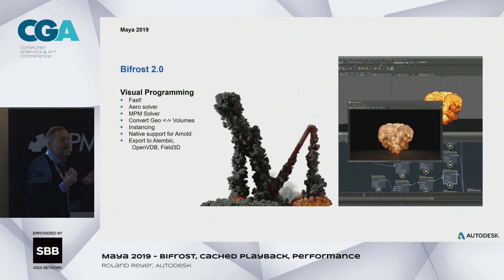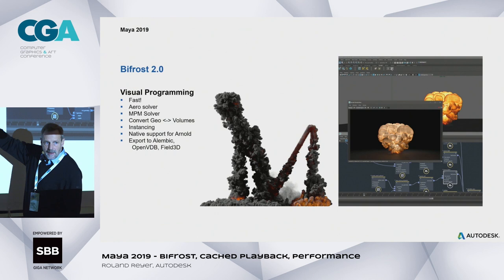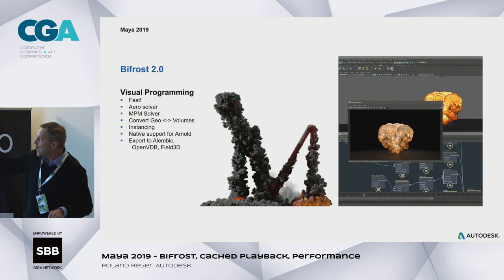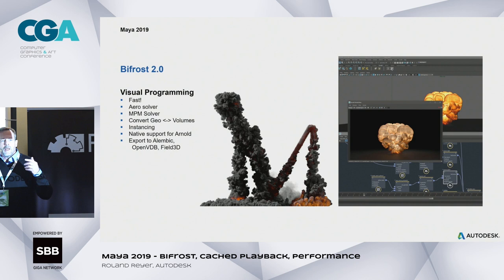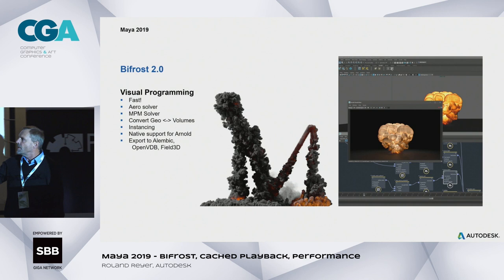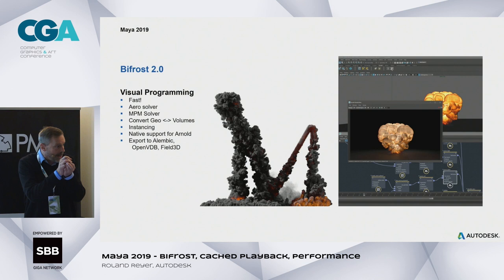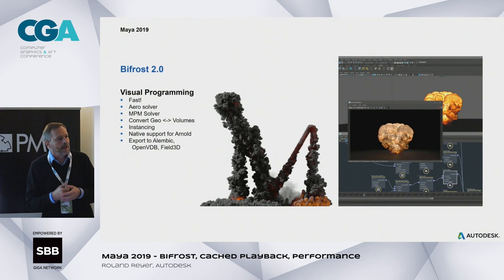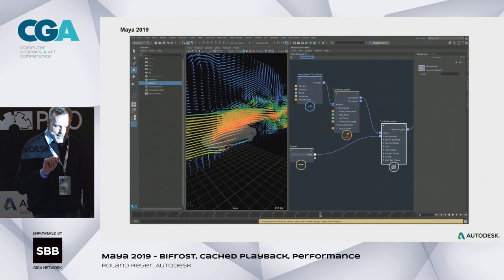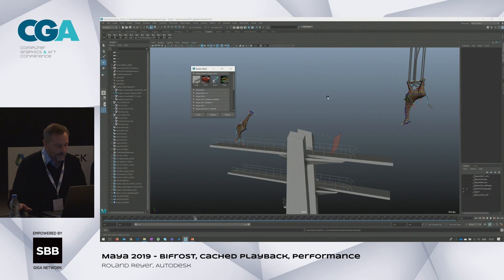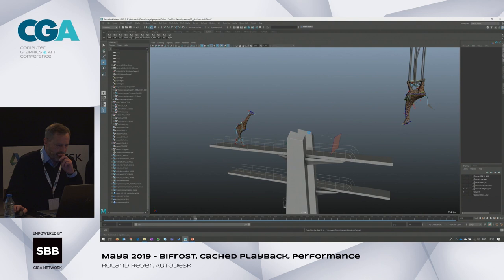Bifrost 2.0 should solve these problems — it's the first iteration with a graph where you can put things together yourself. The misconception is that it's only about fire and smoke. That simulation is just one part; this graph is sort of a programming language that lets you do things in your production — a super-fast script running in your scene. With this graph you build your own nodes with a certain function. It's much faster than a script or expressions in Maya that alter attributes.